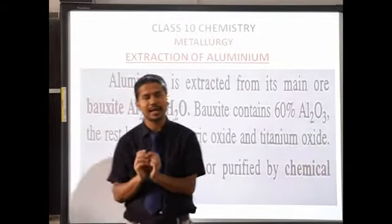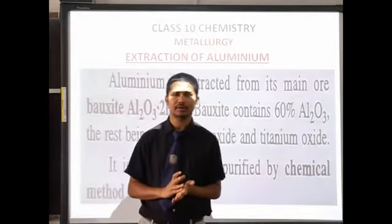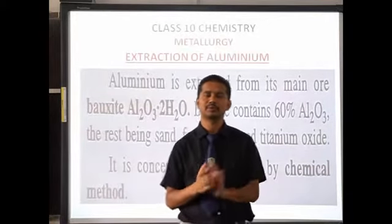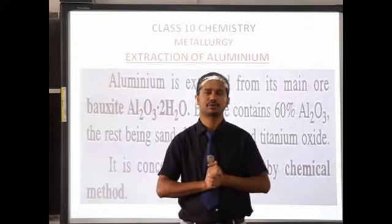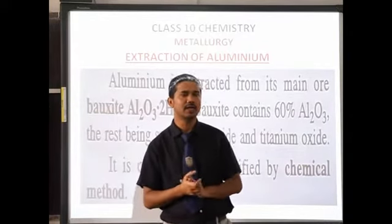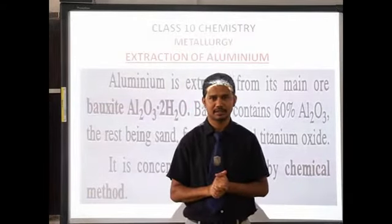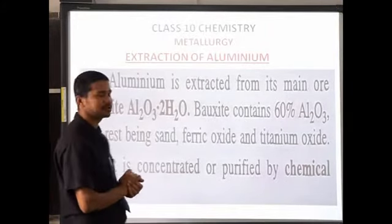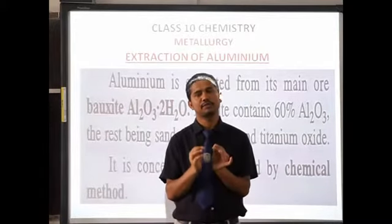Extraction of aluminium also follows these five steps. First, after taking out the ore of aluminium — the main, chief source of aluminium is bauxite. We generally extract aluminium from bauxite because bauxite has got 60 percent aluminium oxide.